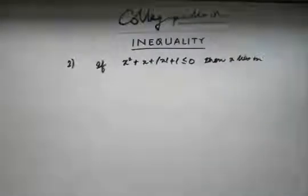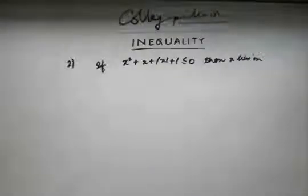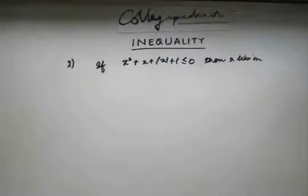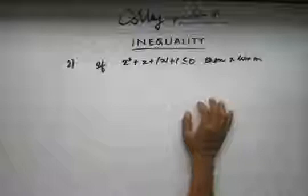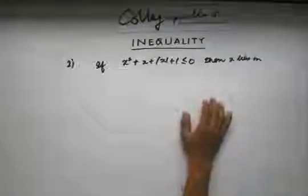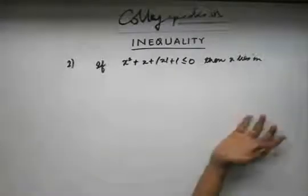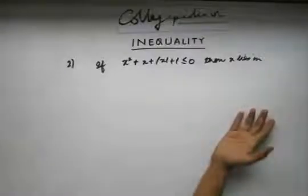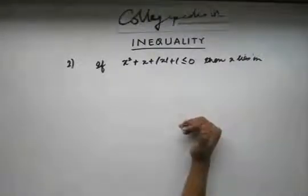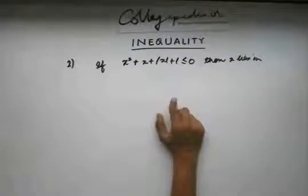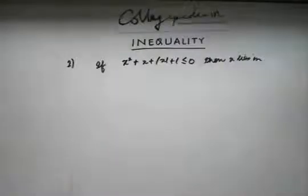The first thing I could do in this question is somehow get rid of the mod sign, which I can do by squaring the terms. I can take mod x on this side and square it, but that may make the process a bit complicated. Looking at this, I have a degree-2 term, x², in this case.